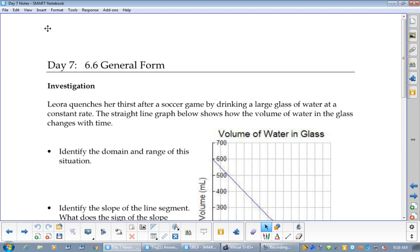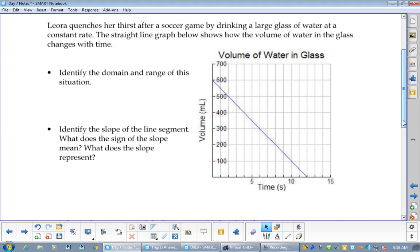We have seen this before, general form. General form is when it's 0 equals AX plus BY plus C. We've done this already. This is just going to be review. Even though this is called general form, this first question doesn't really have anything to do with general form. This is back to kind of a real life question and we're going to do some review of even the last unit. Now putting up your hand, can somebody tell me the domain? Let's read it first. Leora quenches her thirst after a soccer game by drinking a large glass of water at a constant rate. The straight line below shows how the volume of water in the glass changes with time. Can somebody, putting up their hand, tell me what the domain of this graph is?